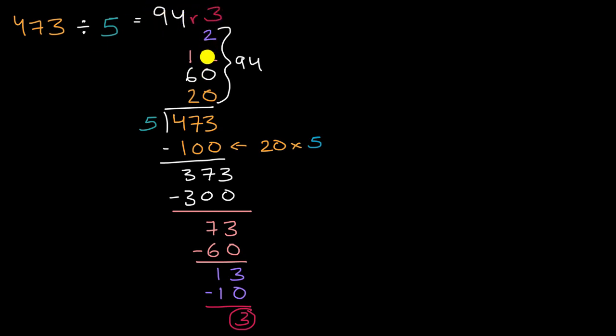Did I do that right? 2 plus 14, let's see. 2 plus 12 is 14, 74, yep, 94. Now let me just show you that there's more than one way to do this. And I'll draw a little line here so we don't get it too confused. We could have done something like this. We could have said, what is 473 divided by 5?